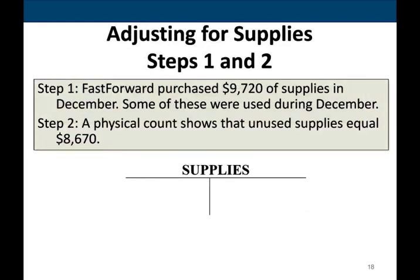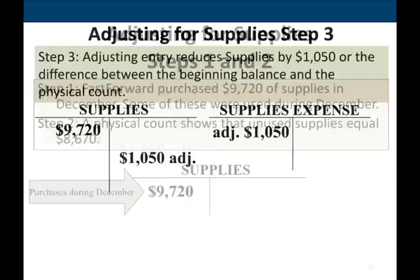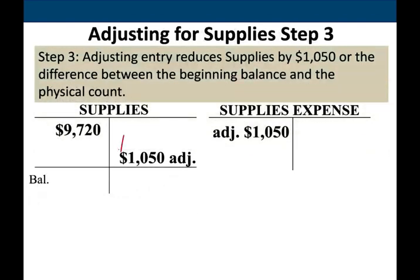Now let's take a look at another prepaid account: supplies. We purchased $9,720 of supplies in December and some of these were used. So step one — the current balance is $9,720. Step two — a physical count shows unused supplies equal $8,670. So we counted the supplies and found we no longer have $9,720; we used some. The difference is $1,050, so we need to reduce our supplies by $1,050 and increase our supplies expense by $1,050.